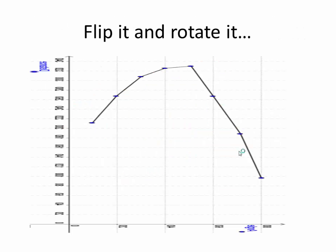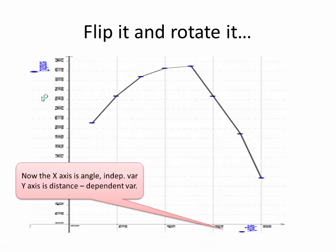If you took this graph and flipped and rotated it, that would be a better graph — the angle on the x-axis and the distance on the y-axis. So now the x-axis is the angle, which is the independent variable, and the y-axis is the distance, which is the dependent variable.